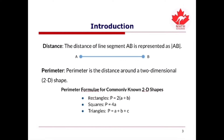The distance of line segment AB is represented with this notation, as shown on the screen. Perimeter is the distance around a two-dimensional shape. The perimeter formulae for commonly known 2D shapes are: for rectangles, 2 times (A plus B); for squares, 4 times A; and for a triangle, A plus B plus C, where the variables represent the side lengths.